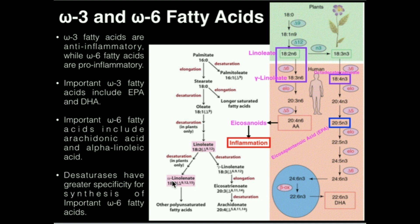We have to get alpha-linolenic acid through the diet. However, on the right side, this desaturase we can do — that's the scheme I showed you earlier — and we can do this transformation, which leads us ultimately to arachidonic acid. So this one figure shows us that yes, we can synthesize omega-6s much easier than omega-3s. We generally have to get omega-3s such as EPA and DHA through the diet.